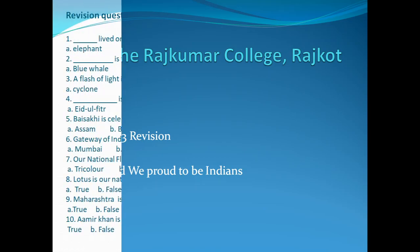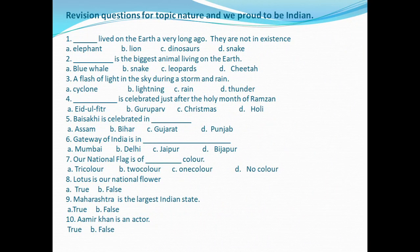Question 1: 'Dash lived on earth very long ago — they are not in existence now.' Existence means present. Like lions, elephants, and snakes exist today, but can we see dinosaurs nowadays? No — they lived very long ago and are no longer in existence. We cannot see any dinosaurs on Earth now.